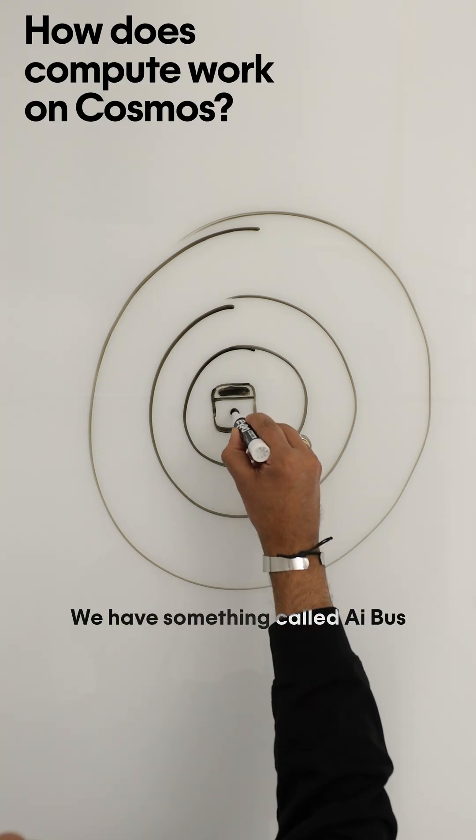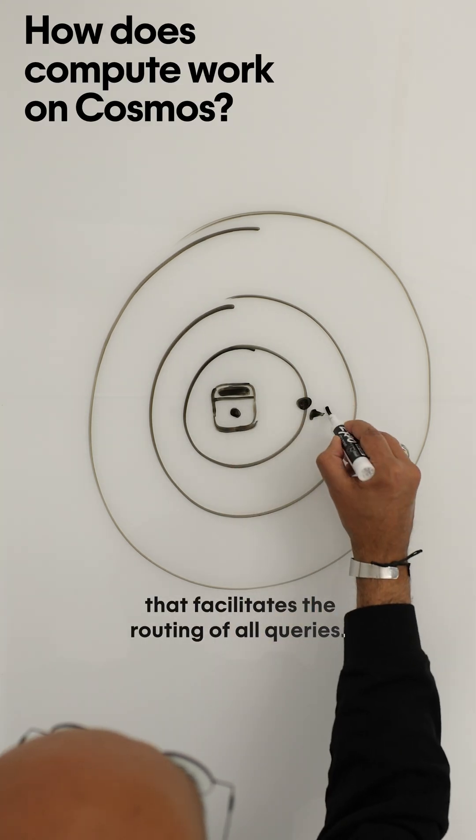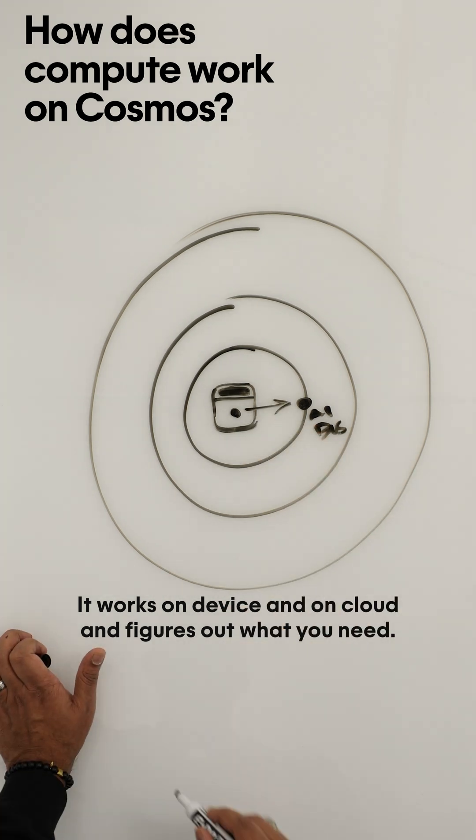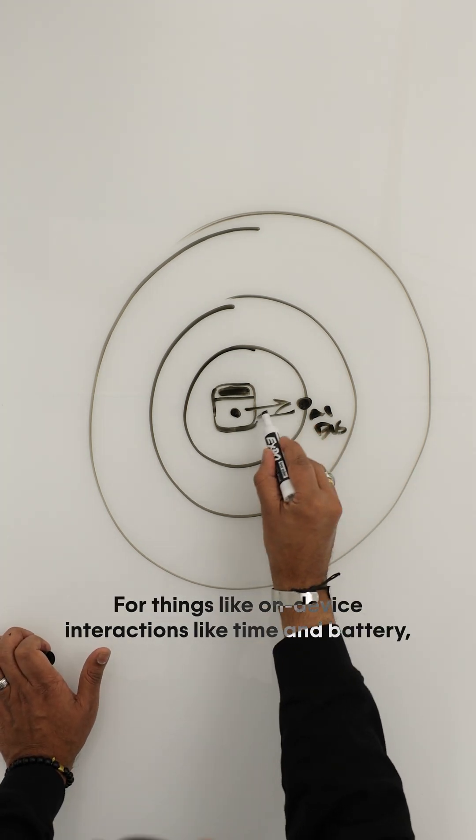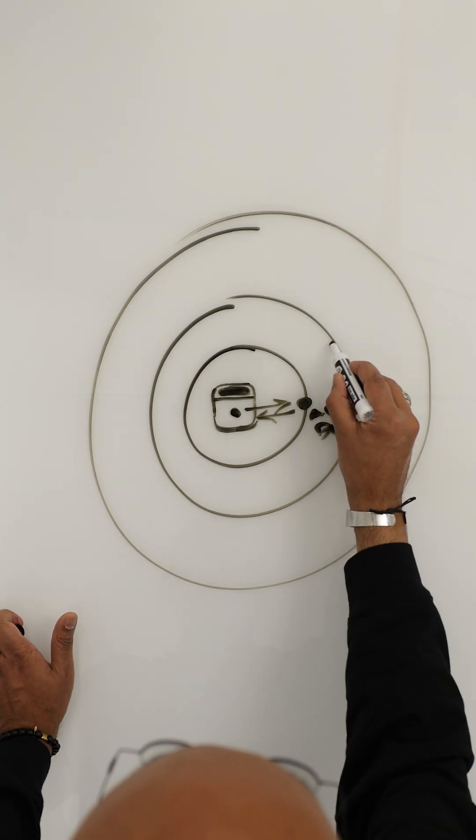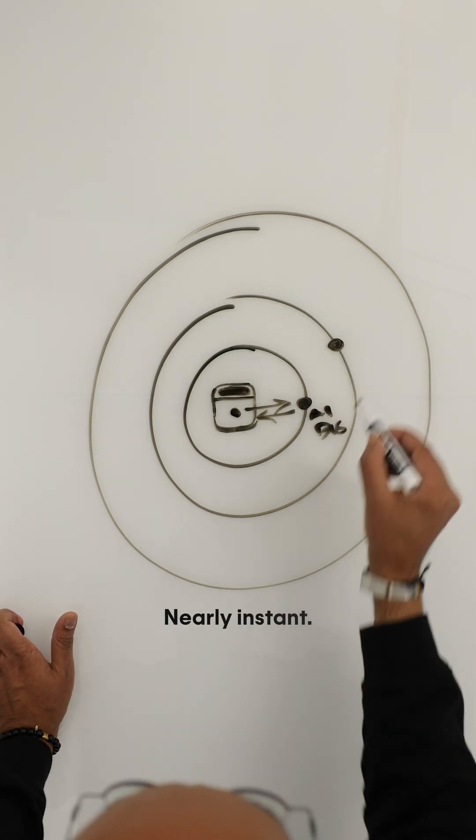We have something called AI Bus that facilitates the routing of all queries. It works on device and on cloud and figures out what you need. For things like on-device interactions, like time and battery, those things are the fastest, nearly instant.